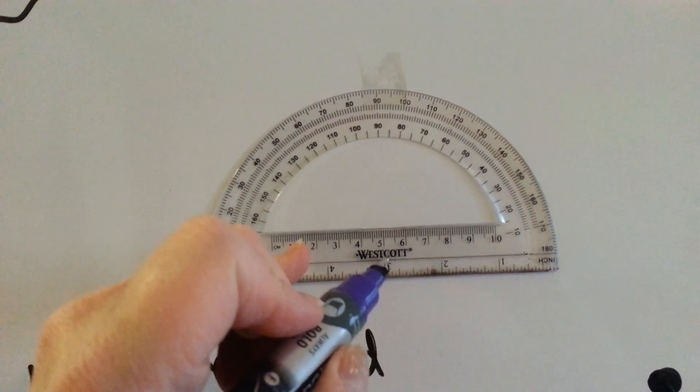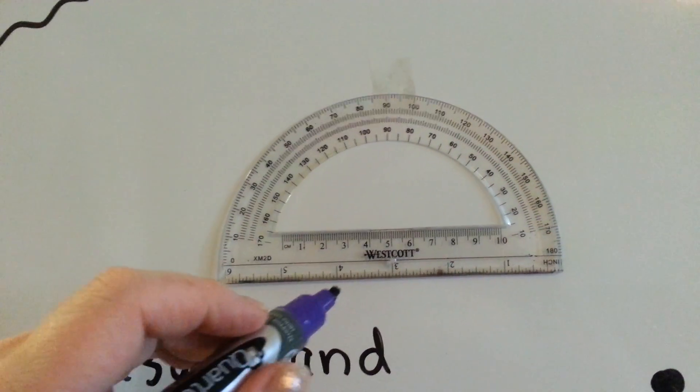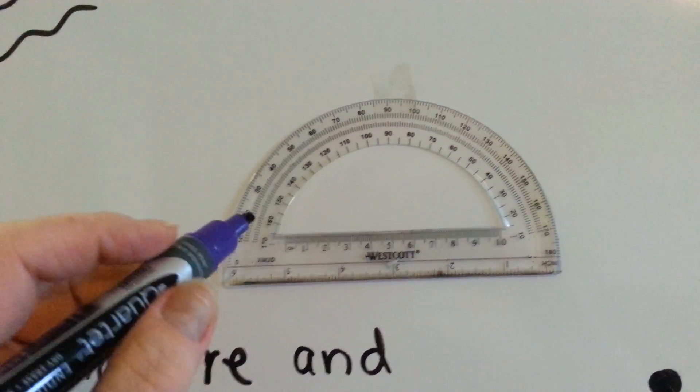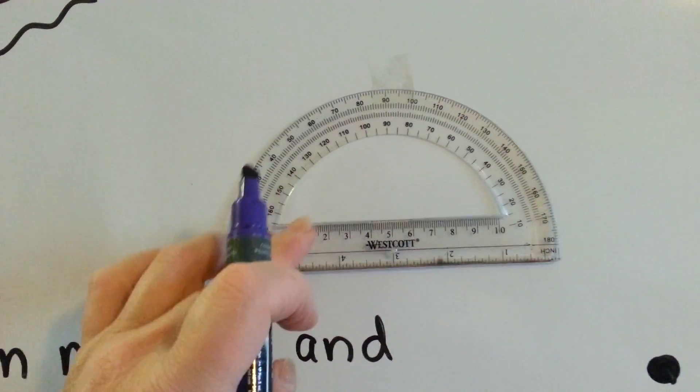What you do is, there's a circle right here. If you can see, this is a Westcott brand. Any brand that is clear is good, because when you can see through it, then it really helps you see the lines underneath it.